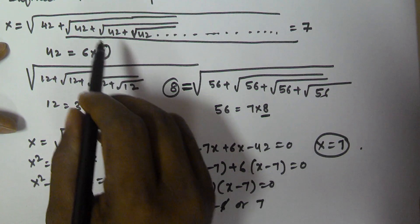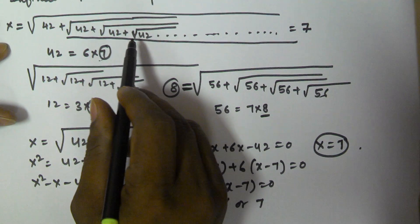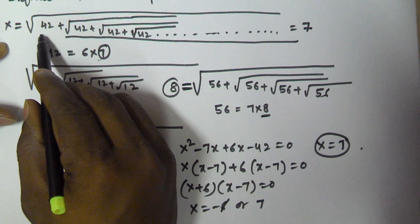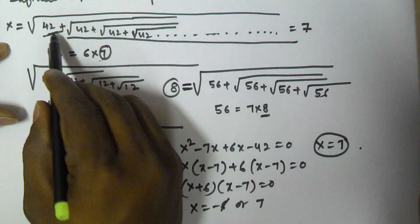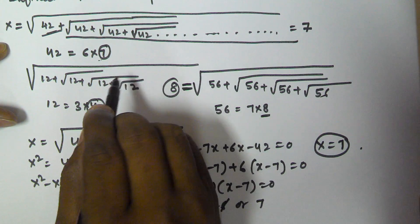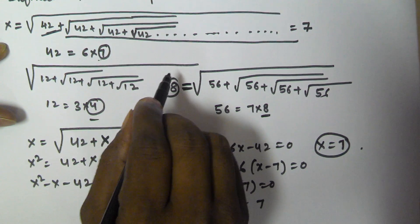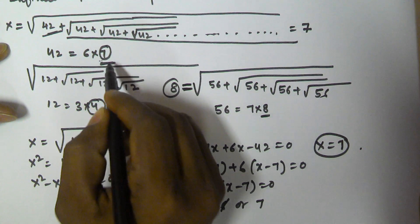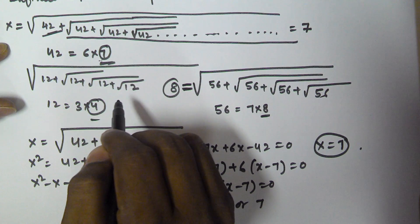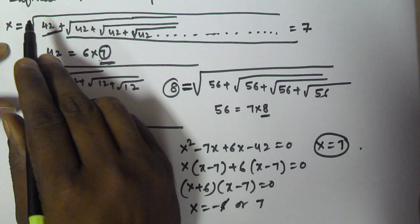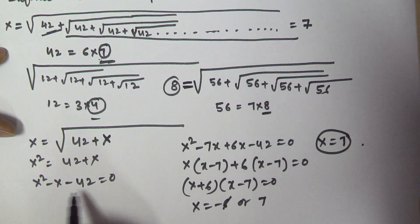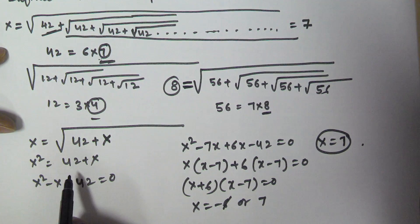When you see this kind of problem, first check if the number can be written as a multiple of two consecutive numbers. If it can, take the larger of those two consecutive numbers as the result. Otherwise, use the conventional algebraic method as shown to solve the given problem.